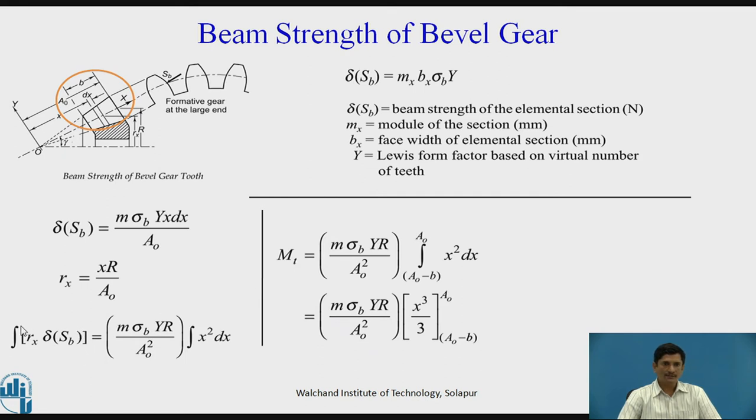If I integrate on both the ends, I can get this relation. This left-hand end becomes Mt, it is the total torque. On the right-hand end, these terms are Mb sigma B Yr, so these are unaffected, and for this integral I need to put the limits A0 minus B to A0, and solving I can get Mb Yr upon A0 square, x cube by 3, the limits are same A0 minus B to A0. The torque Mt is given as Mb sigma B Yr into bracket 1 minus B by A0 plus B square upon 3 A0 square.